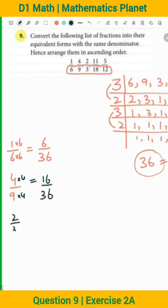2 by 3. How to convert into 36? 3 twelves are 36. Very good students. How to convert 11 by 18 into 36?